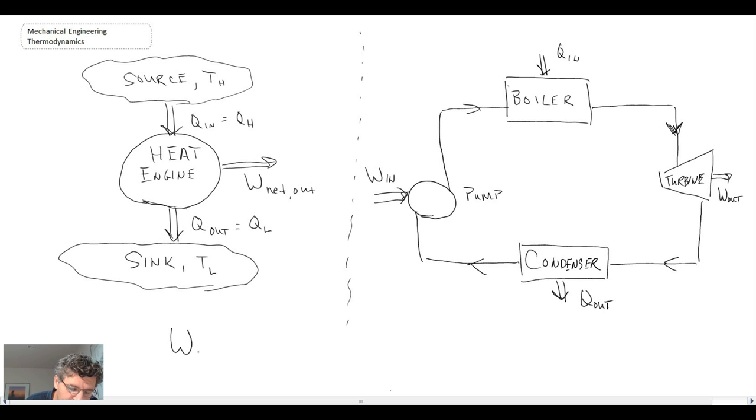So we can say work net out equals work out minus work in. And it is also equal to Q in minus Q out. So those are two ways that you can determine the net work out.